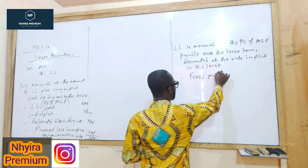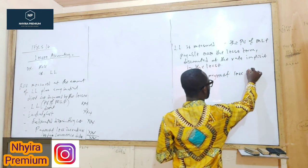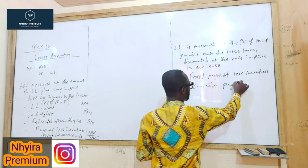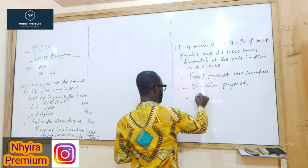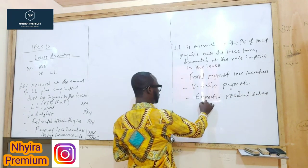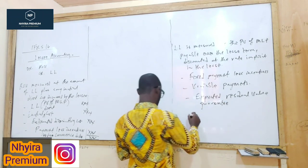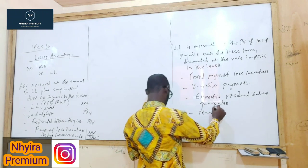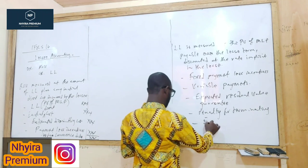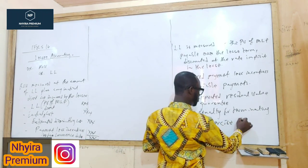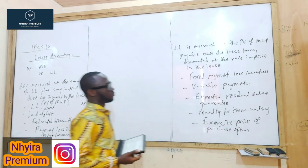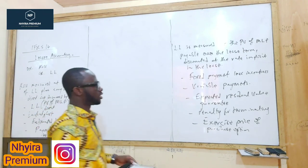What should be included in the lease liability? Any fixed payments less incentives; any variable payments where there are consumer price index adjustments in the future; any expected residual value that is guaranteed; any penalty for terminating the lease; and the exercise price of any purchase option if the option is reasonably certain to be exercised.